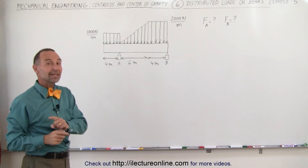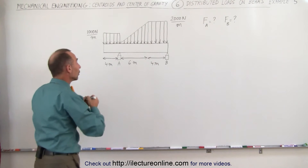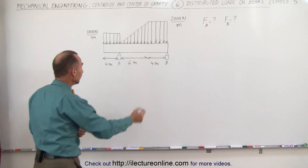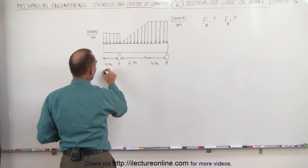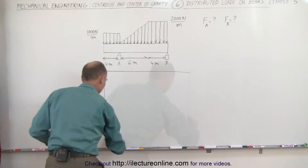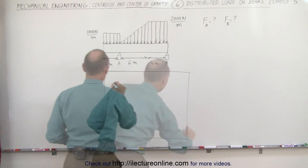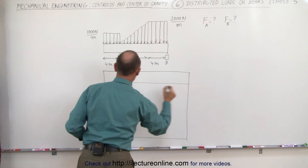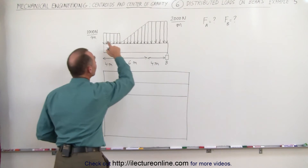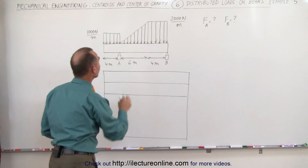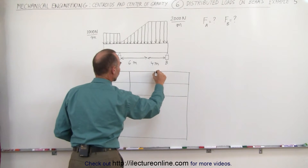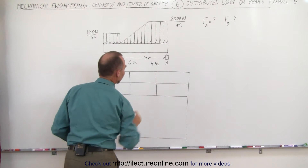We're going to use the same technique as the previous example. We're going to set up a table. The table will include five rows. Row 1 and row 2 represent each individual section of the load. Since we have three sections, we have to divide the top two rows into three segments.